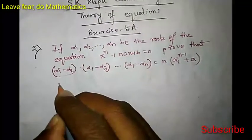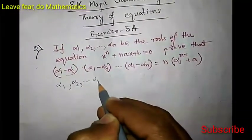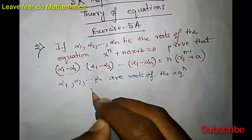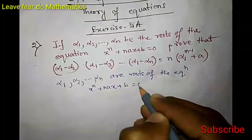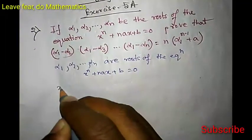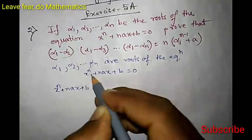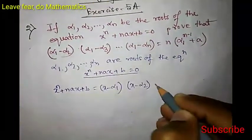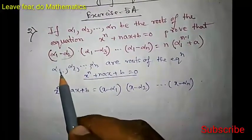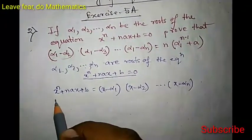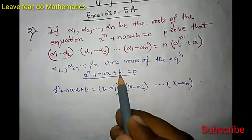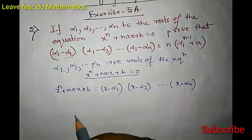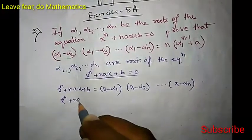We are given that α₁, α₂, …, αₙ are roots of the equation xⁿ + nax + b = 0. Since these are the roots, we can write xⁿ + nax + b = (x − α₁)(x − α₂)···(x − αₙ). As these are n distinct roots, we can factor the polynomial this way, since if α₁ is a root then (x − α₁) is a factor, and similarly for all others.